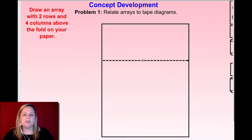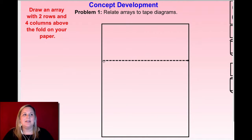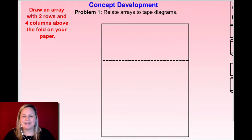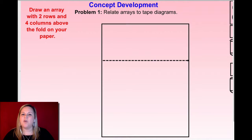Let's jump in and get started with our first example. What I want you to do is get a blank piece of paper. You're going to take it and fold it maybe a third of the way down — kind of like I have my model over here. Pretend that this dotted line is where the fold is in your paper. In the top part of your paper above the fold, I would like for you to draw an array with two rows and four columns.